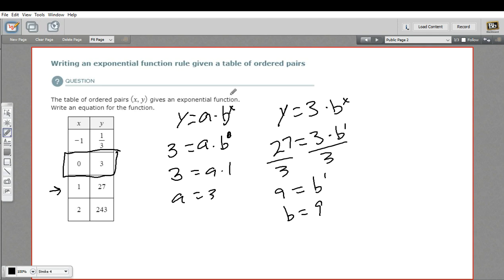So we can rewrite our original now as y equals 3 times 9 to the x power. And that is our function. So that's how to write an exponential function when you've just got a table of ordered pairs.